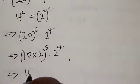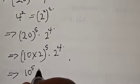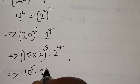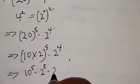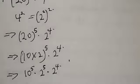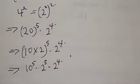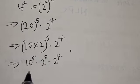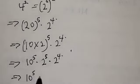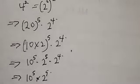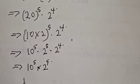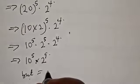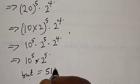From the same rule, this implies we have 10 raised to power 5 multiplied by 2 raised to power 5, multiplied by 2 raised to power 4. Since we have 2 raised to power 5 and 2 raised to power 4, this can be expressed as 10 raised to power 5 multiplied by 2 raised to power 9. And 2 raised to power 9 equals 512.